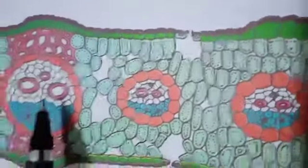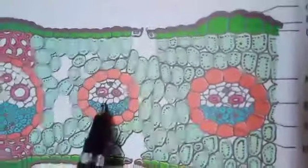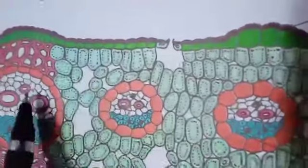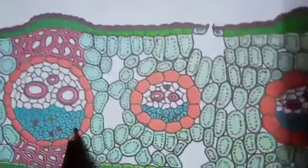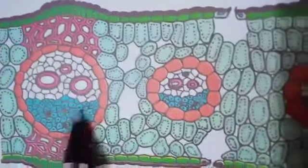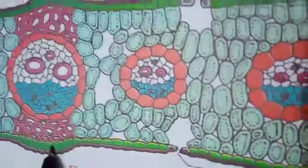Some vascular bundles are small and some are larger in size. Each vascular bundle is surrounded by a bundle sheath made up of parenchyma tissue. Vascular bundles are conjoint, collateral, and closed. Xylem lies towards the upper epidermis and phloem lies towards the lower epidermis. This completes the internal structure of dicot and monocot leaf.